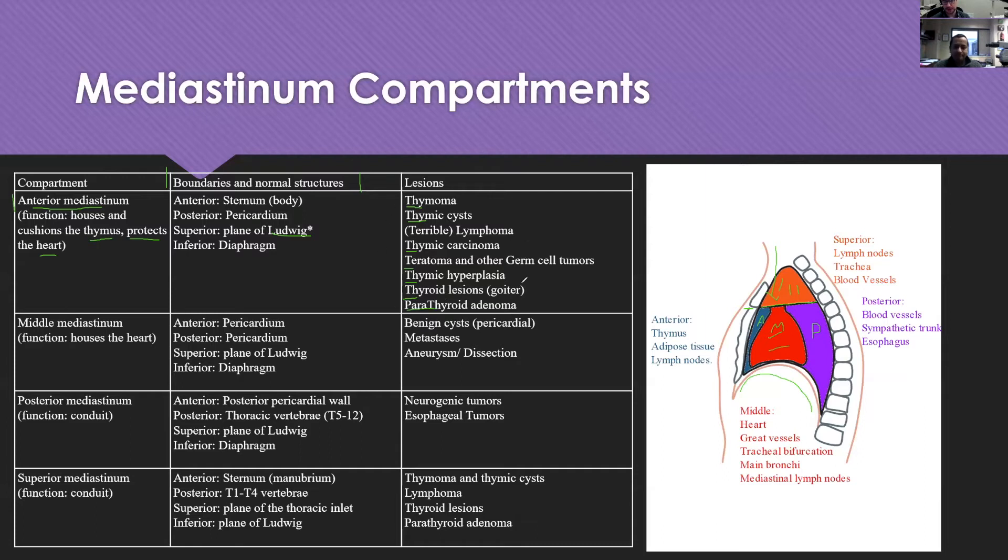The differentials for the anterior mediastinum are largely in the T's. The middle mediastinum, which is where we have the heart, has a smaller differential. We have some benign cysts that are often pericardial, you can get metastases in this space, and remember that you can get all kinds of abnormalities with the vasculature in this space, so you can get aneurysms and dissections which could present as a middle mediastinal mass.